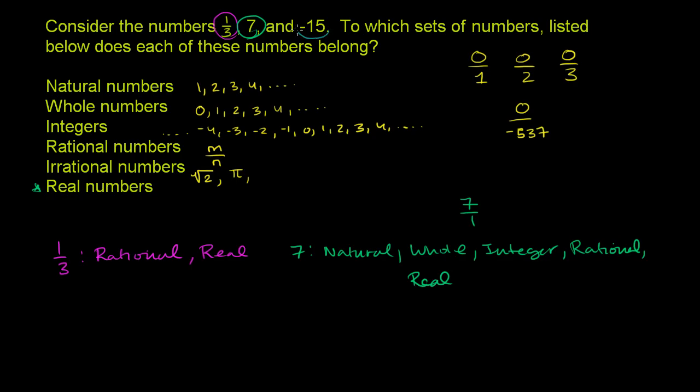We have negative 15. Negative 15 is not a natural number. It's a negative number, so it's not a natural number. Natural numbers are only the positive integers, we could say. Whole number, it's not a whole number because that's just the natural numbers and zero. It is an integer. It is the opposite of positive 15. It is an integer.